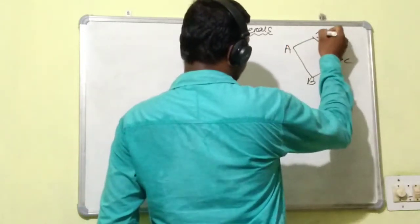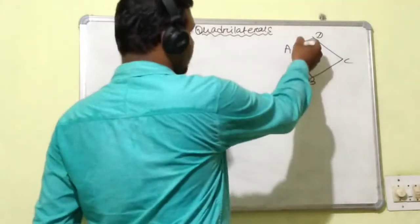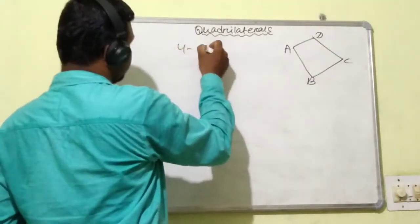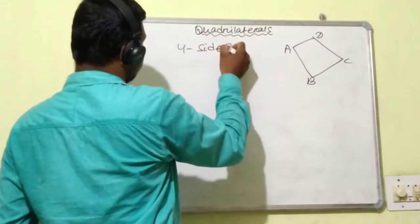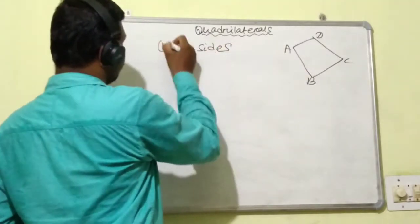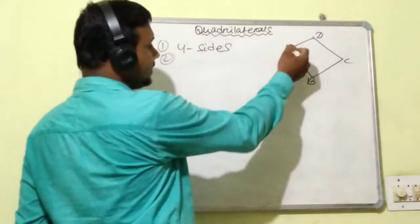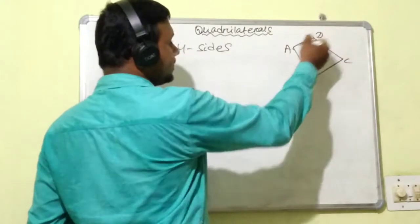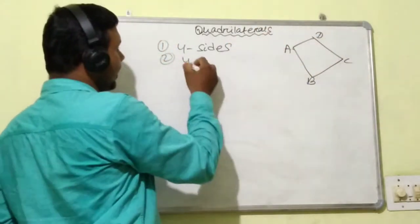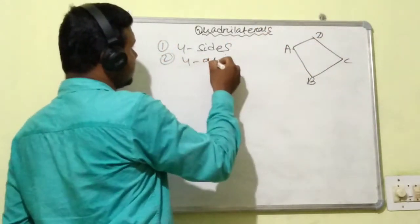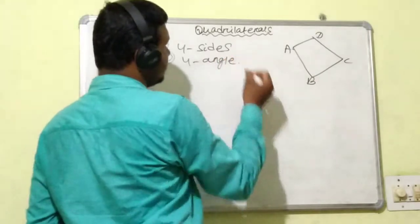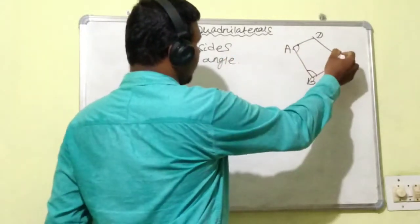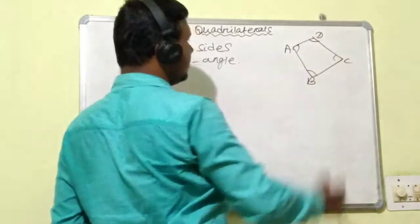Here you see A, B, C, D is a quadrilateral having four sides. The four sides are AB, BC, CD, and DA. It also has four angles: angle A, angle B, angle C, and angle D.